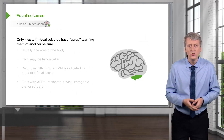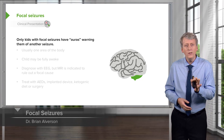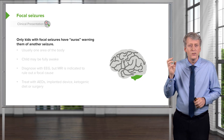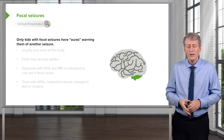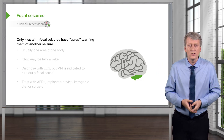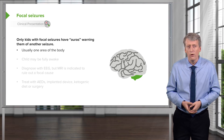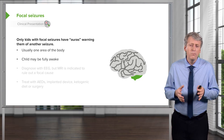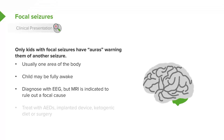Let's switch focus to focal seizures. Only children with focal seizures will have auras warning them of an impending seizure. Auras are unique to each child — sometimes they'll see certain colors or just get a sense a seizure is coming on. Focal seizures usually affect one area of the body, such as an arm or the face, and the child may be fully awake during the event. We diagnose with EEG, but an MRI is absolutely indicated for a first-time focal seizure to rule out a focal brain abnormality. Treatment includes AEDs, implanted devices, and in severe cases, ketogenic diet or surgical removal of the lesion or seizing area.